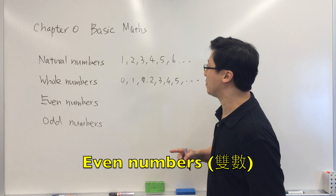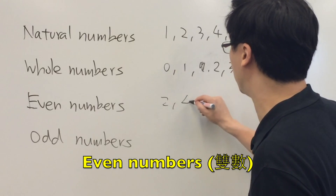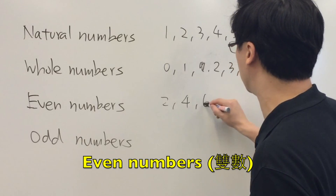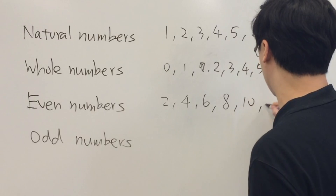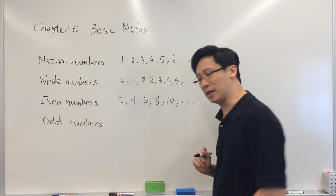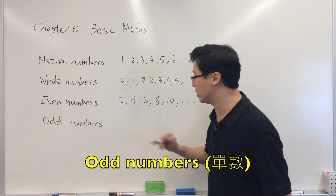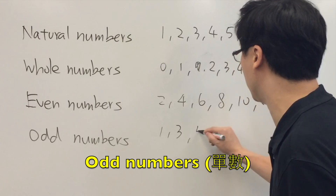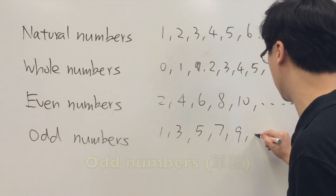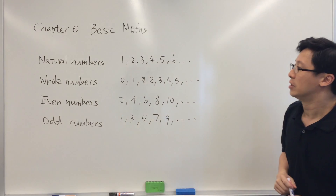For even numbers, we have 2, 4, 6, 8, 10 and so on. For odd numbers, we have 1, 3, 5, 7, 9 and so on.